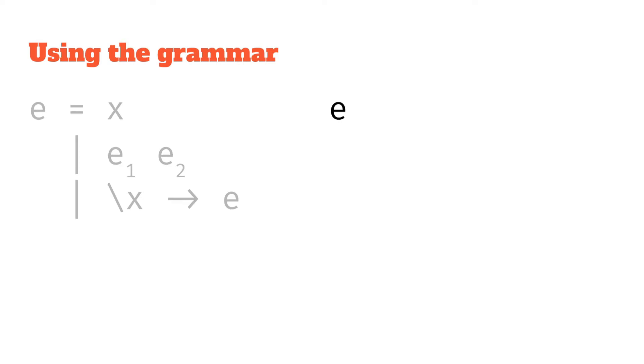So let's have a look at how we can use this grammar to generate some kind of valid lambda expression. So let's start with E, because we want a valid lambda expression. So we're going to start with E for expression. We're going to choose a rule. So let's say we choose the application rule, so that E is equal to E1, E2.